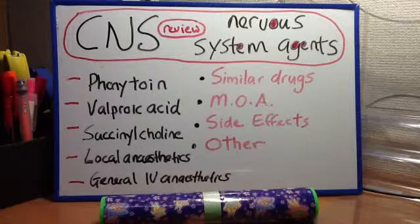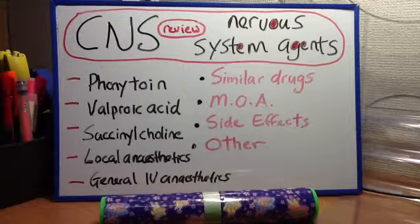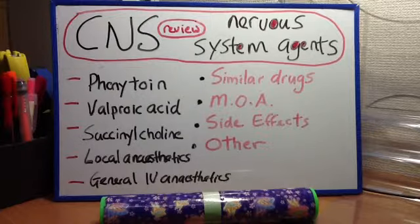Local anesthetics. Similar drugs include esters and amides such as procaine, cocaine, benzocaine, and lidocaine. Mechanism of action: blocking sodium channels. Clinical uses: minor surgical procedures. Side effects: seizures. Other: vasoconstrictors such as epinephrine are often given locally with a local anesthetic.